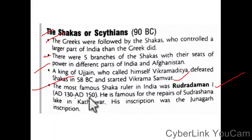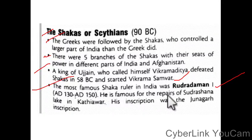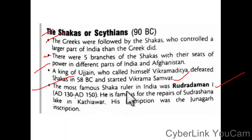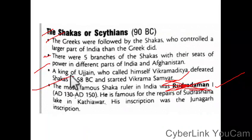The most famous Saka ruler in India was Rudradaman, around 130 to 150 AD. He is famous for the repairs of Sudarshana Lake in Kathiawar. His inscription was the Junagadh inscription. Please remember Rudradaman — very important.